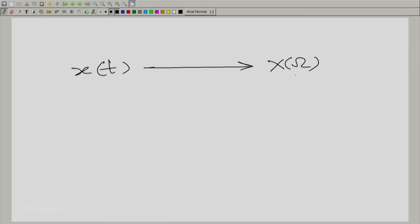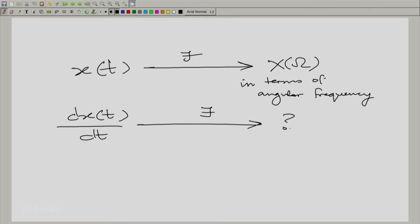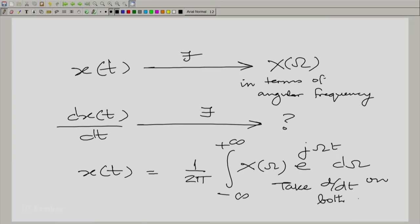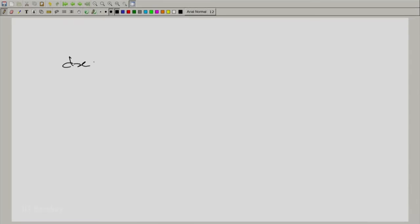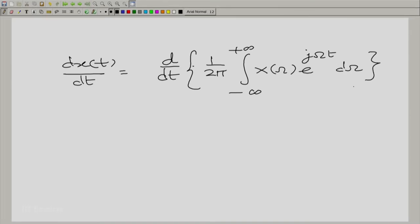We want to find out what is the Fourier transform of dx(t)/dt. And we answer the question by writing down x(t) as an inverse Fourier transform. So, here is an inverse Fourier transform and now we take the derivative on both sides. When we do that, we get dx(t)/dt is d/dt of the integral.